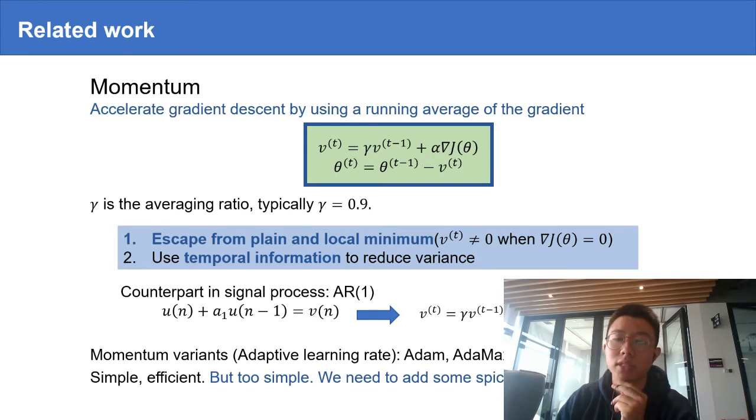In the field of signal processing, we can see the gradient as a special kind of signal, and momentum is nothing but an autoregressive filter with order 1. It's simple, but it's too simple. In this paper, we endeavor to extend that to a more efficient and complicated filter design, like Kalman filter.